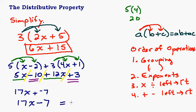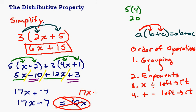My answer is 17x minus 7. Can I combine that to give 10x? No, I cannot — because these are not like terms. In order to do that I would need 17x minus 7x, then that would be 10x. But 17x and 7 are not like terms, so I am done.